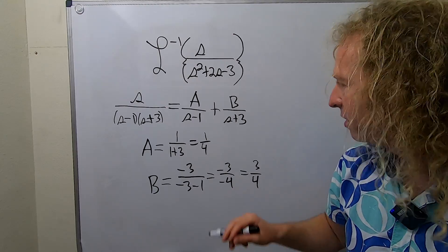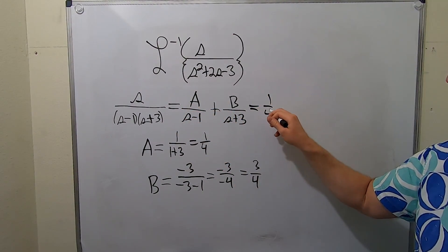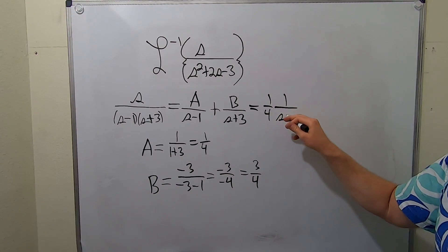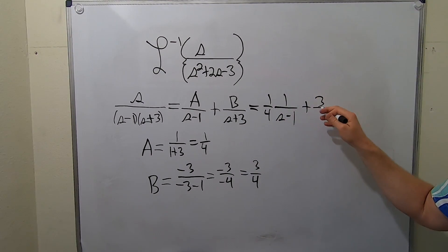So here we are. So this is equal to... So the one-fourth goes up top, but you can put it in the front. That's what people do. It makes it easier. And then the same thing with the three-fourths. You just do plus three-fourths, and then 1 over s plus 3.